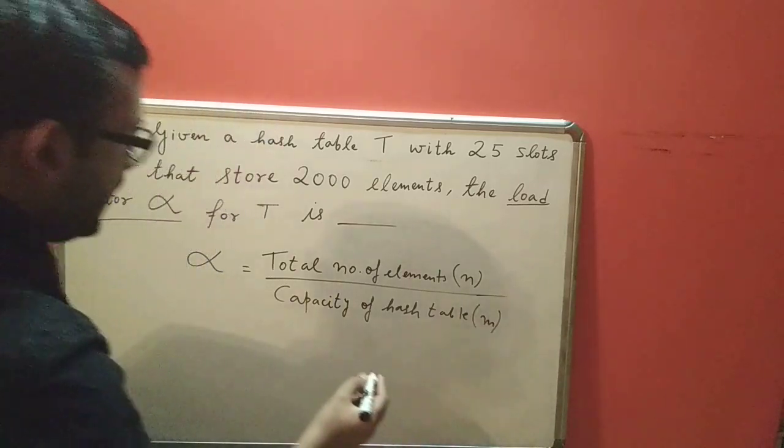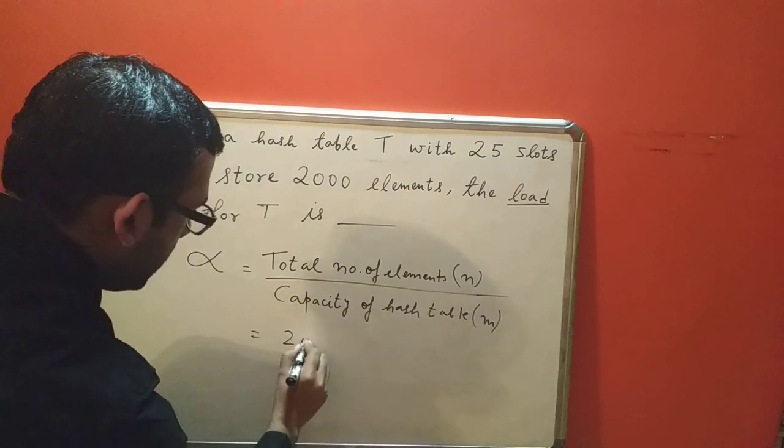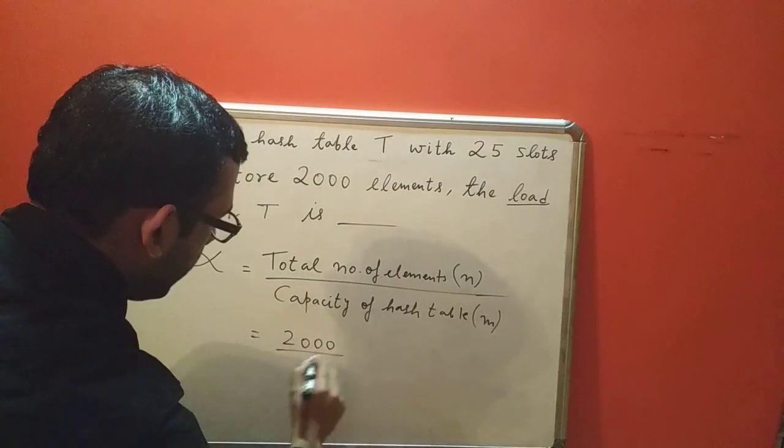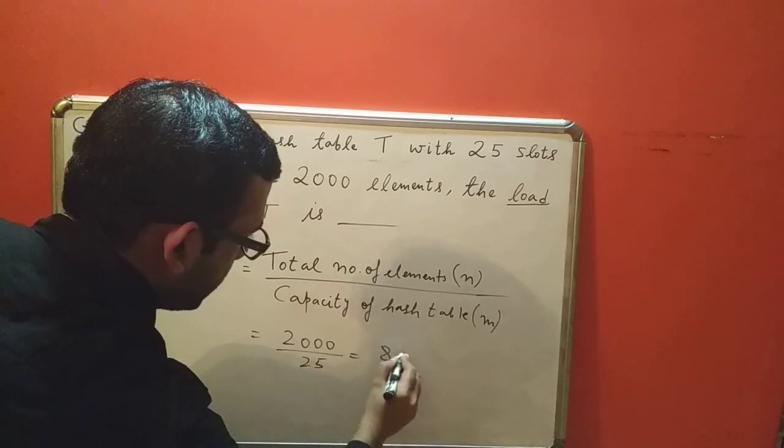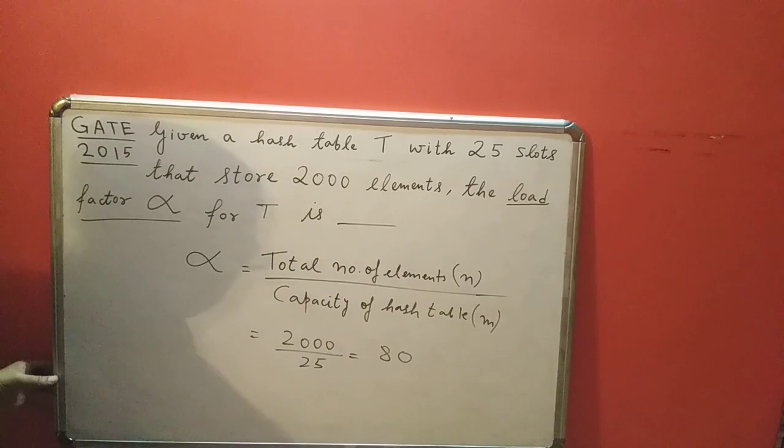If we substitute the values in this formula, we'll get 2000 divided by 25, which will come to be exactly 80. So this is the answer. The load factor for this distribution is 80.